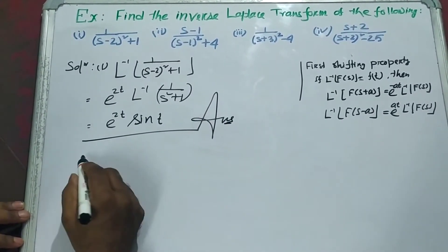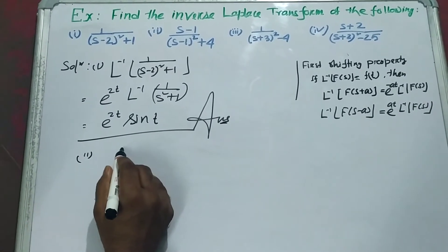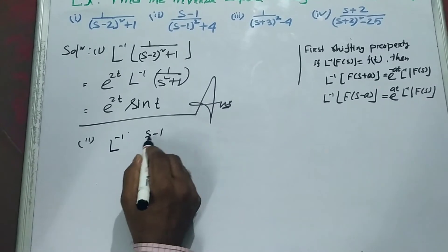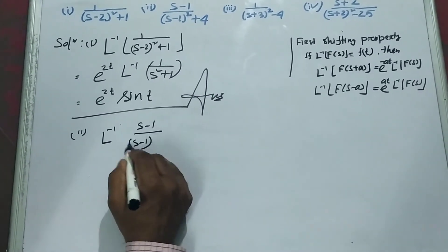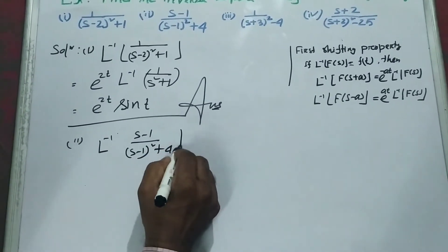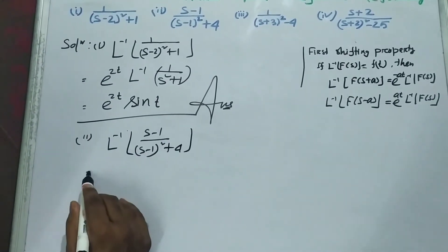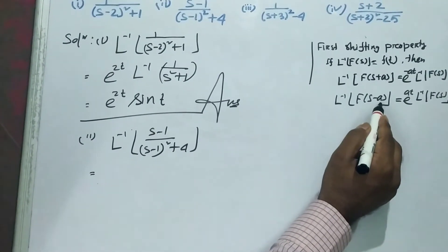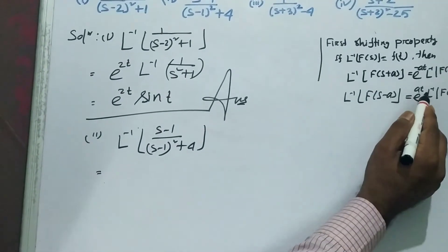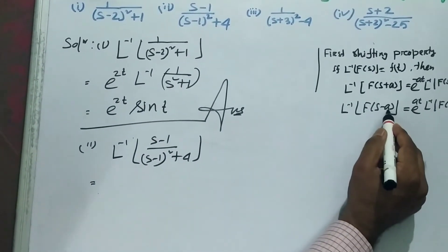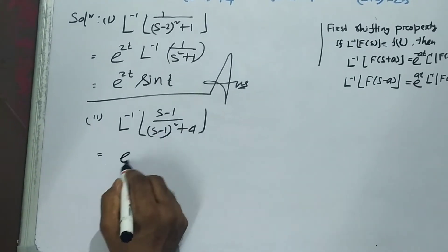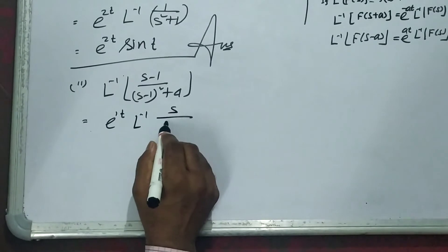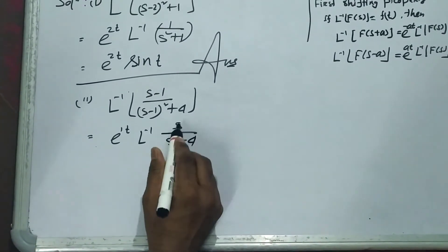Next we consider number 2: L inverse of (s minus 1) by (s minus 1) whole square plus 4. By using this property, we remove the 1. Then we get e to the power 1·t times L inverse of s by (s squared plus 4).